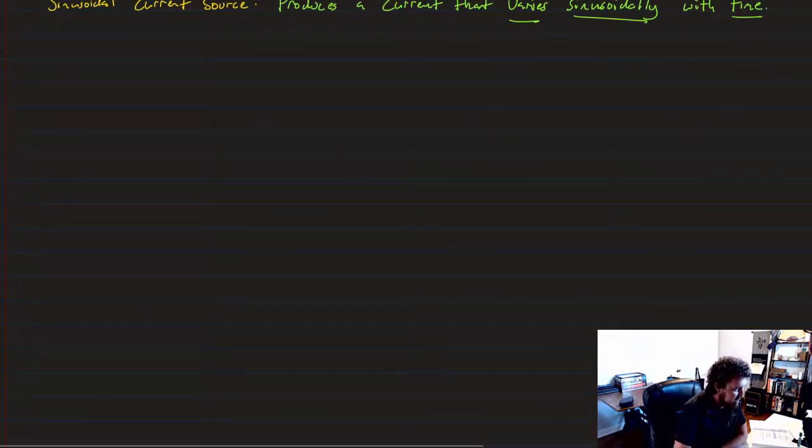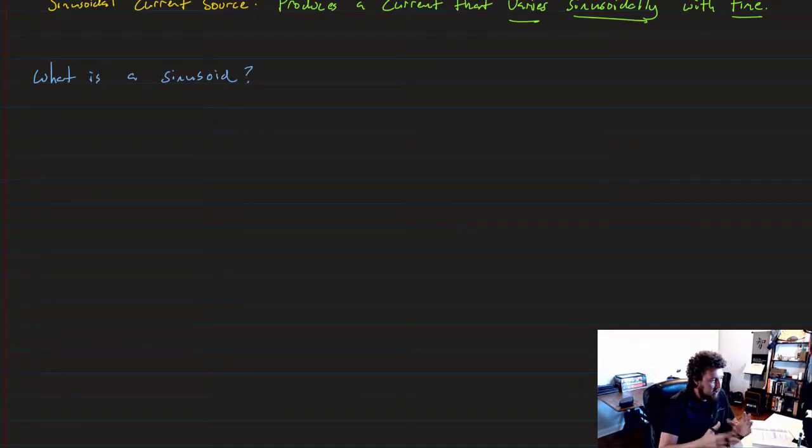So let's talk about what does that mean. What does it mean for something to vary sinusoidally? Let's write that question down. What is a sinusoidal voltage source? Now, for the rest of this lecture, I'm going to use voltage to illustrate everything, but it's a one-to-one translation between voltage and current.